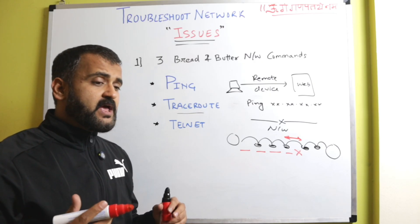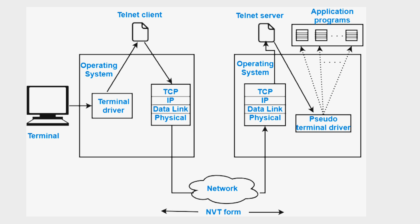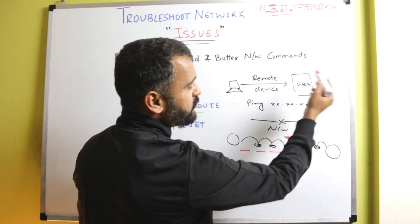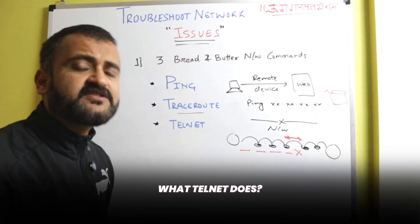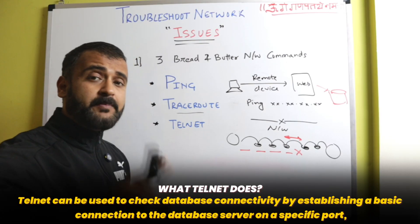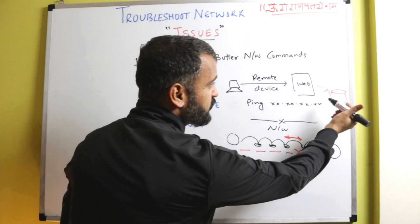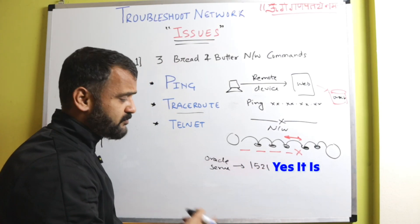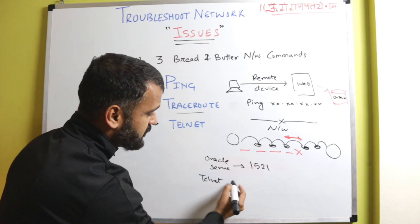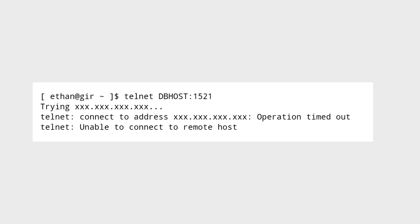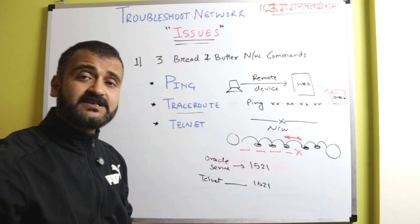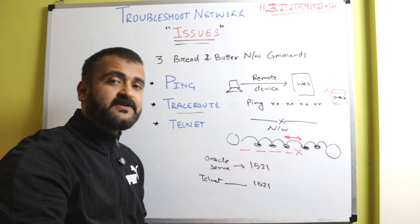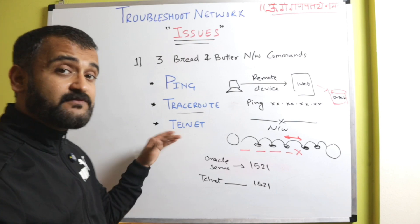Telnet is a different kind of command which can actually check whether a particular service is available on a particular port. For example, if you're able to log into your web server but can't make an entry because the database is down, you can use telnet to see whether a particular application is listening on a particular port. For example, if the database was Oracle, you can check whether the Oracle server is listening on port 1521. If you see a success, that shows your network port is accessible. If not, it could be a firewall issue, or that specific port is down on the server. Telnet gives you that kind of visibility.